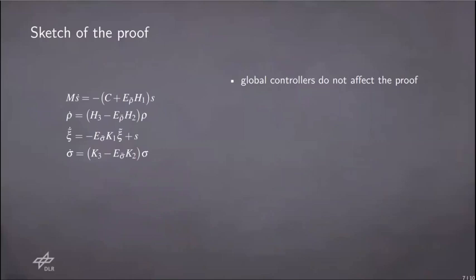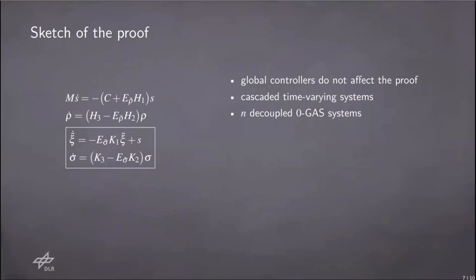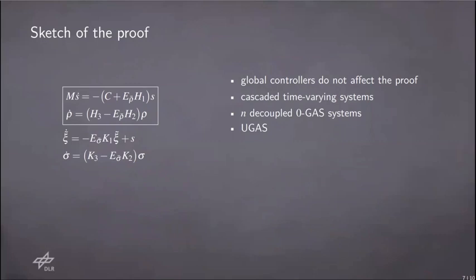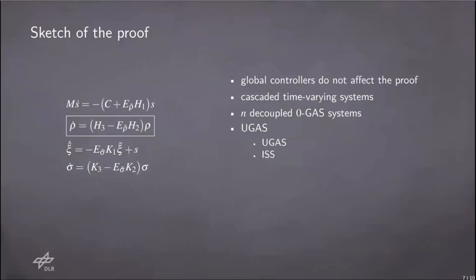For the stability proof, it's useful to look at the system as a cascaded interconnection of two subsystems. The highlighted one has an input s coming from the previous subsystem. When s is zero, it consists of n decoupled globally asymptotically stable systems. Although the other subsystem has in addition the matrices M and C, it can still be shown to be uniform globally asymptotically stable. And that's because it's the interconnection of a uniform globally asymptotically stable system and an input-to-state stable system.